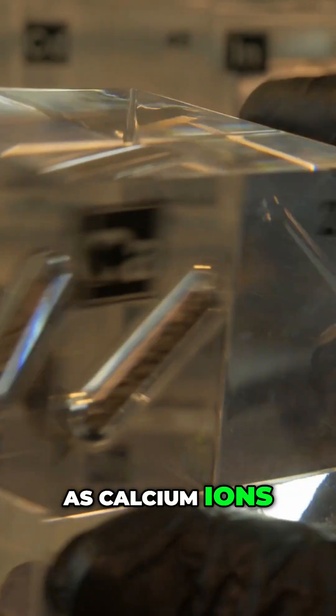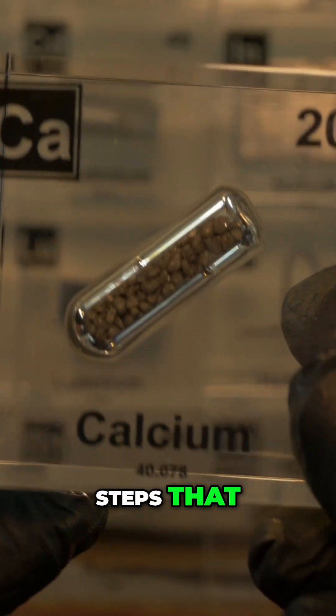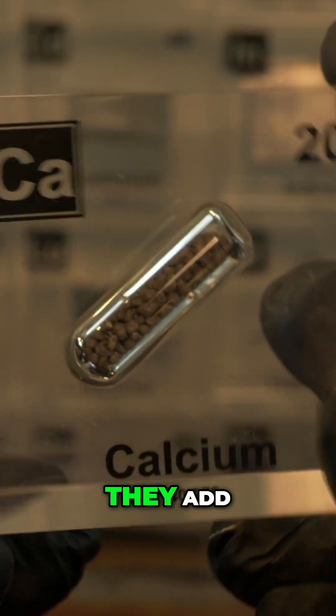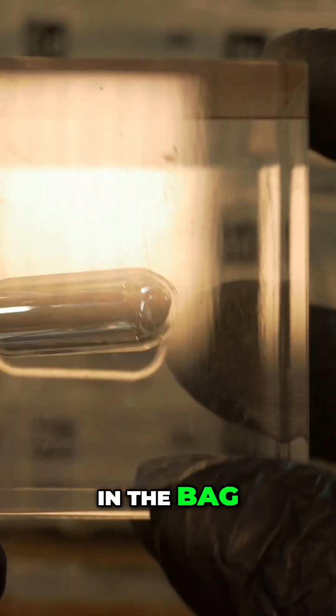Without calcium, blood cannot clot properly as calcium ions are required for many of the enzymatic steps that lead to a stable blood clot. In blood banks, they add substances that bind calcium to prevent donated blood from clotting in the bag.